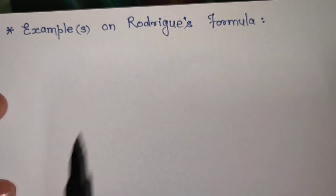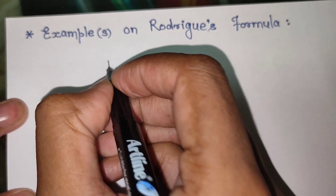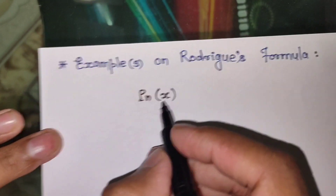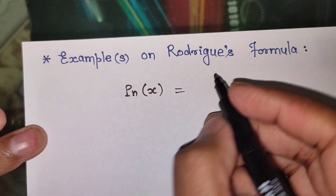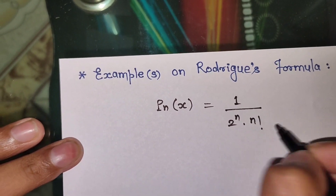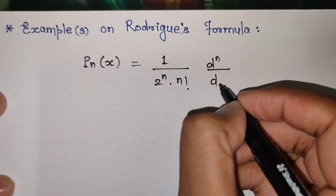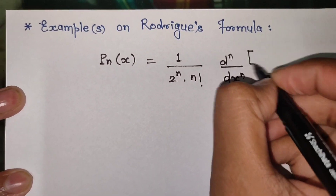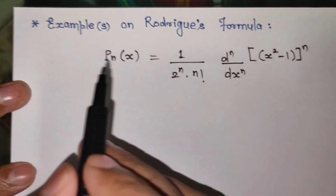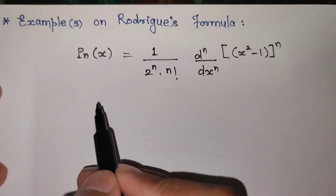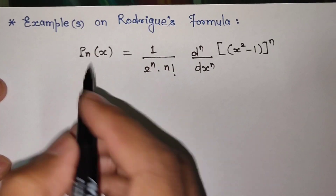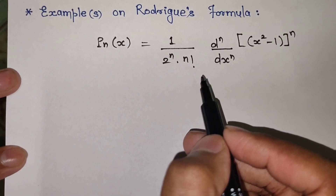Do you remember Rodrigues' formula? If yes, very good; if not, just see here. Rodrigues' formula is given by Pn, written as Pn = 1 upon 2 to the power n, into n factorial, into the nth order derivative with respect to x of (x² - 1) to the power n. This is the Rodrigues' formula that we proved in the last learning video — a very lengthy and complicated proof, but we tried to present it in the easiest manner.